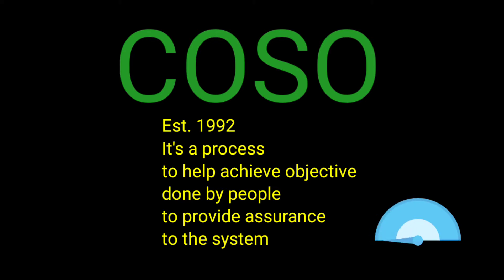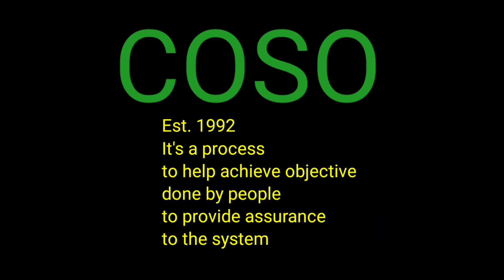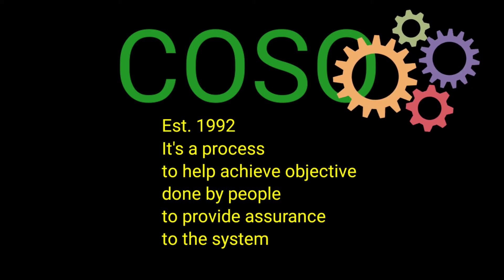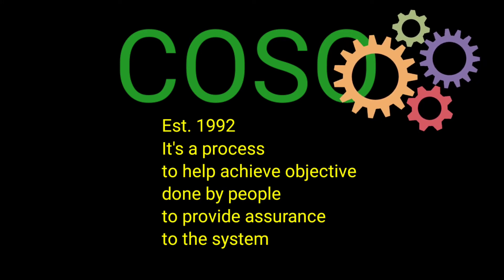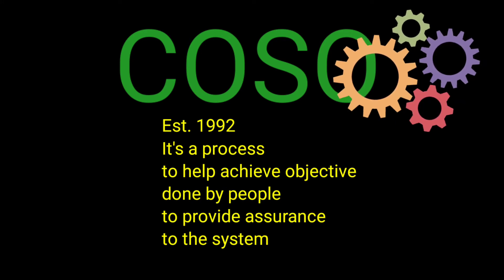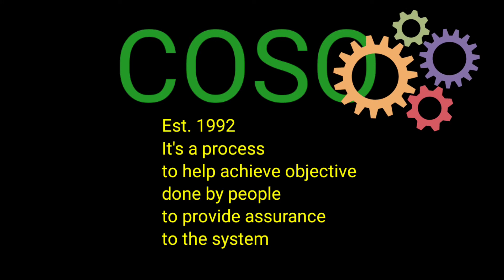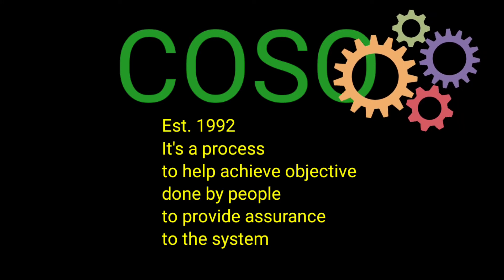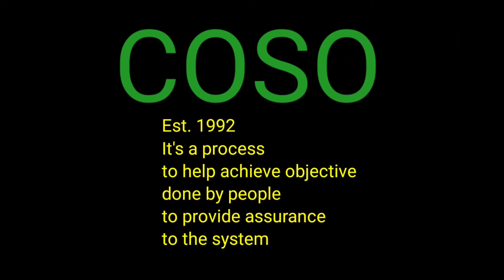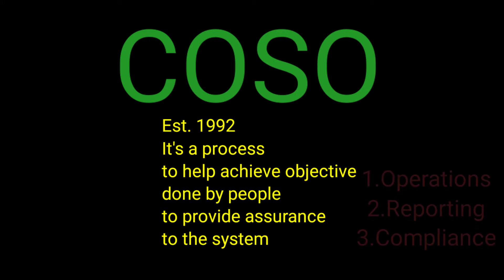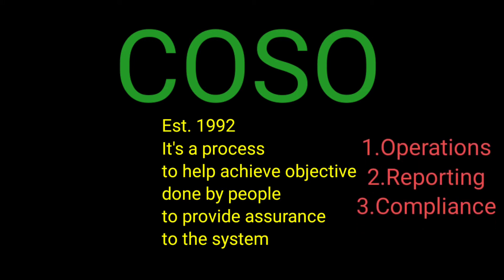COSO defines internal control as a process affected by the entity's board of directors, management, and other personnel designed to provide reasonable assurance regarding the achievement of objectives relating to operations, reporting, and compliance — that is three things: operations, reporting, and compliance.